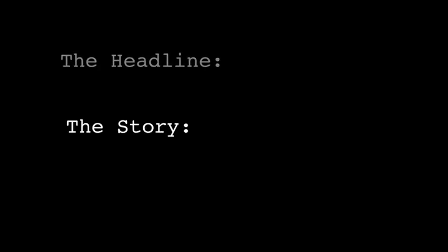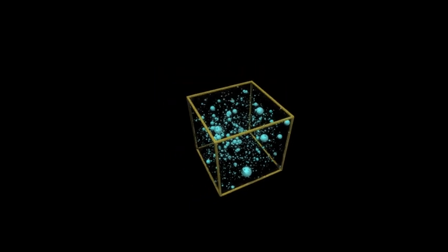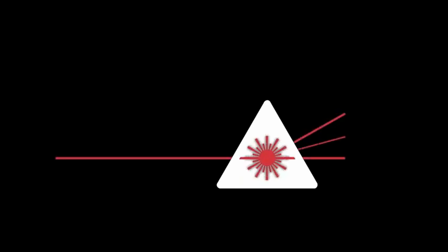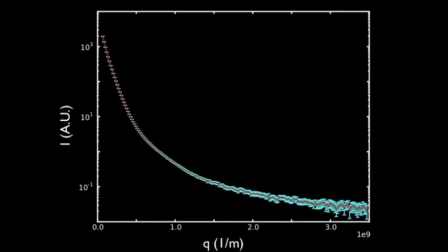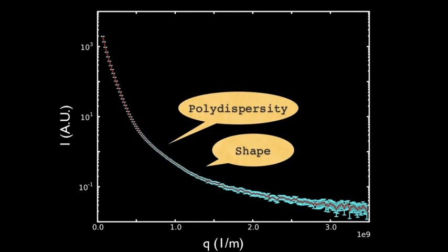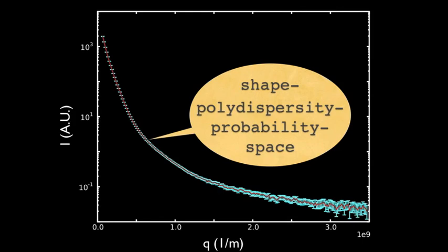Let me give a little background. If we have a polydispersed system of particles and we want to know more about it, after electron microscopy we put it in a small angle scattering machine where we collect the scattered x-rays and collect a scattering pattern on absolute scale with error bars. We'd like to get information on shape, polydispersity, and packing of the spheres — however in small angle scattering it's not possible to separate these contributions, so instead you have a shape-polydispersity probability space.